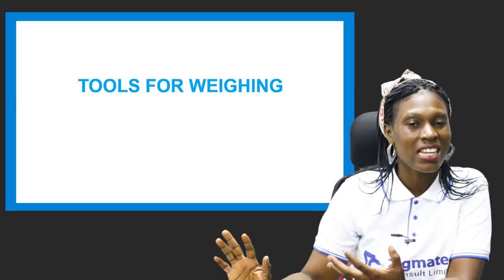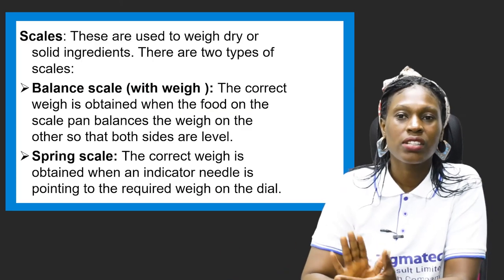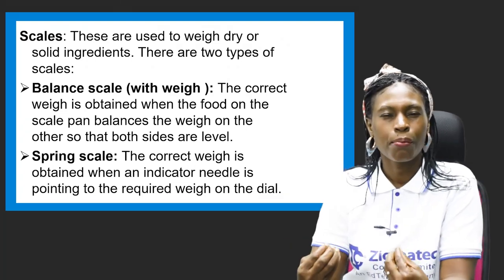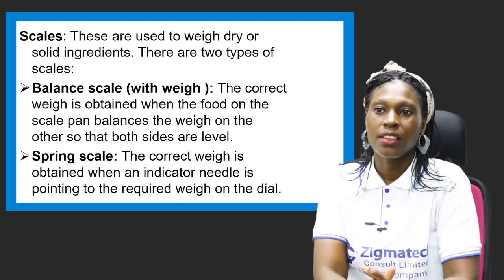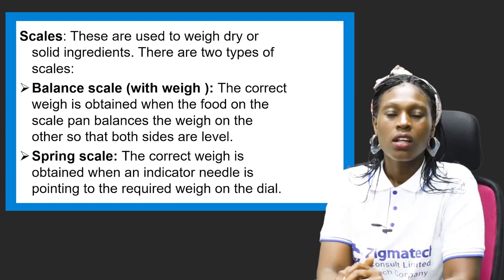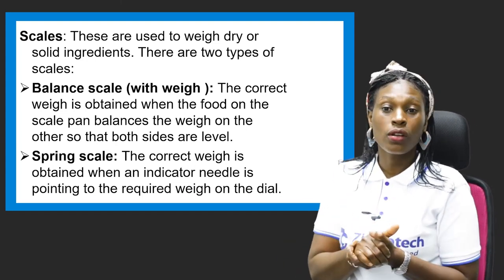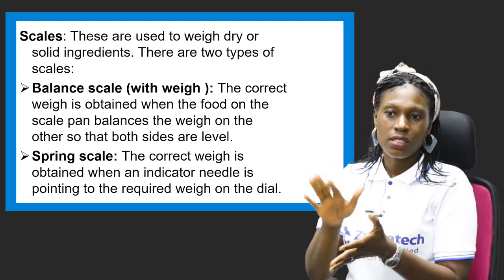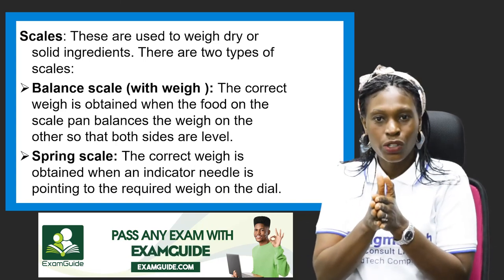Now let's look at the tools for weighing. We have scales, which are used to weigh the amount or quantity of whatever you want to use. Scales are used to weigh dry or solid ingredients. There are two main types. The first is the balance scale with weights — the correct weight is obtained when the food on the scale pan balances with the weights so that both sides are level.